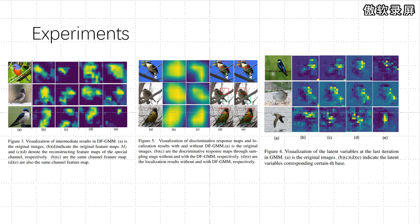Insights about the influence of our proposed approach can be obtained by visualizing the effects of feature maps. As shown in Figure 3, the feature map response can be shrunk to pay attention to accurate discriminative regions with DFGMM. We also visualize the latent variables in GMM as shown in Figure 4; the linear weight coefficients can be displayed at the area of the object. We draw the discriminative regions and display the discriminative response map predicted by our model in Figure 5.